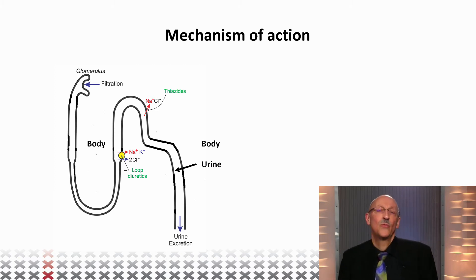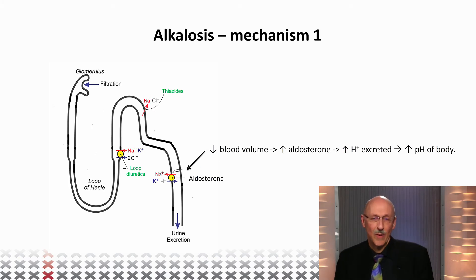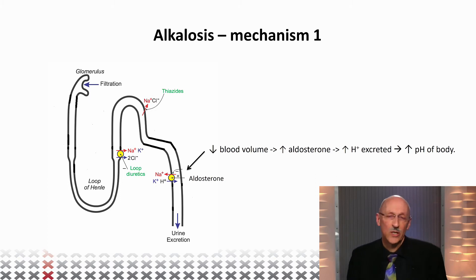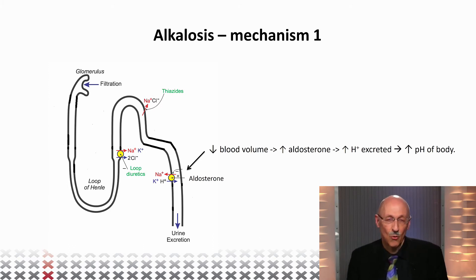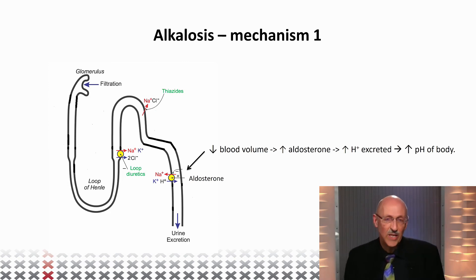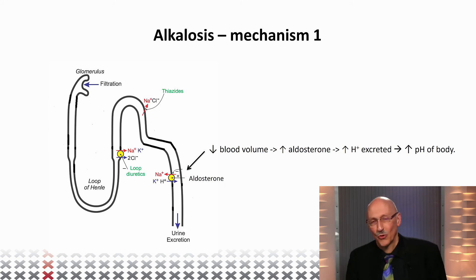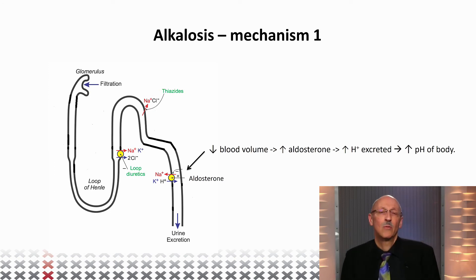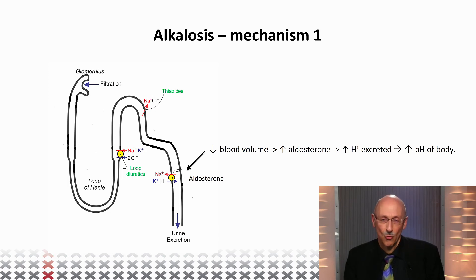So how does that influence blood pH? There are two mechanisms discussed in this context. First, if your secretion of water increases, your blood volume will go down. This is monitored by the renin-angiotensin-aldosterone system, which will upregulate aldosterone. This interferes with an exchanger that normally takes up sodium from your urine and exchanges it for either a potassium ion or a proton.